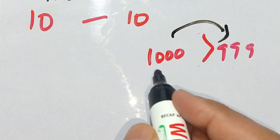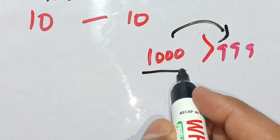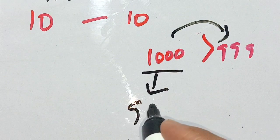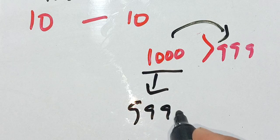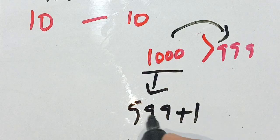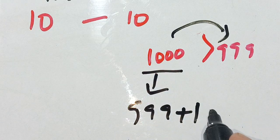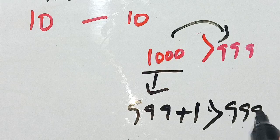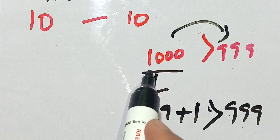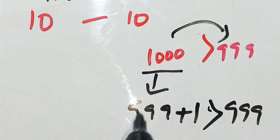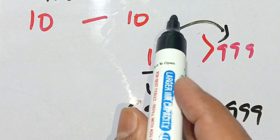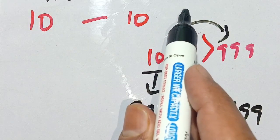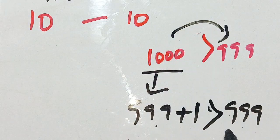This means that 1000 can be broken down as 999 plus 1, which equals 1000 and is greater than 999. So in place of 1000 we put 999 plus 1, and in place of 999 we keep 999 as it is.